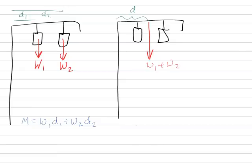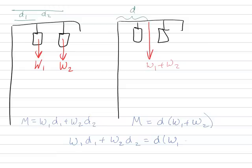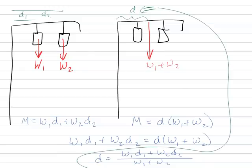I could choose an arbitrary point to apply both weights and choose a distance such that the moments are the same. The net moment would be W1D1 plus W2D2, and I need to set these equal to each other: d equals W1D1 plus W2D2, all over W1 plus W2. That gives me the equivalent distance where I should place the resultant weight — another equivalent system.